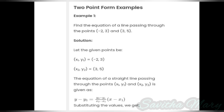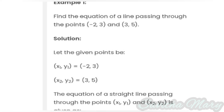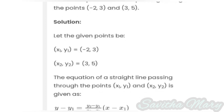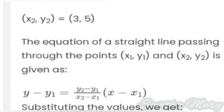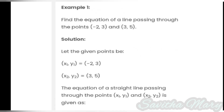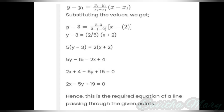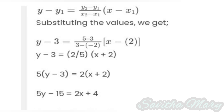Here is the first problem: two-point form. Find the equation of the line passing through the points (minus 2, 3) and (3, 5). These are the two given points. Naming the two points: first point is (x1, y1) and second point is (x2, y2). So x1 is minus 2, y1 is 3, x2 is 3, y2 is 5. The equation of the straight line is y minus y1 equal to (y2 minus y1) divided by (x2 minus x1), into (x minus x1). Substituting the two points, we get y minus 3 equal to (5 minus 3) divided by (3 minus of minus 2), into (x minus of minus 2), because the value of x1 is minus 2.